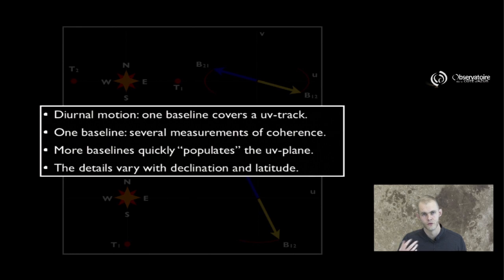One way to summarize all of these ideas is that the diurnal motion, simply the motion experienced because of the rotation of Earth around its axis, makes one baseline actually cover not just a single point in the UV plane, but an actual track in that plane. The consequence is that one baseline is going to provide you with several coherence measurements at several places in the UV plane, which is good. More observables to help you characterize the object you're observing. You're going to populate the UV plane if you involve more and more baselines together.